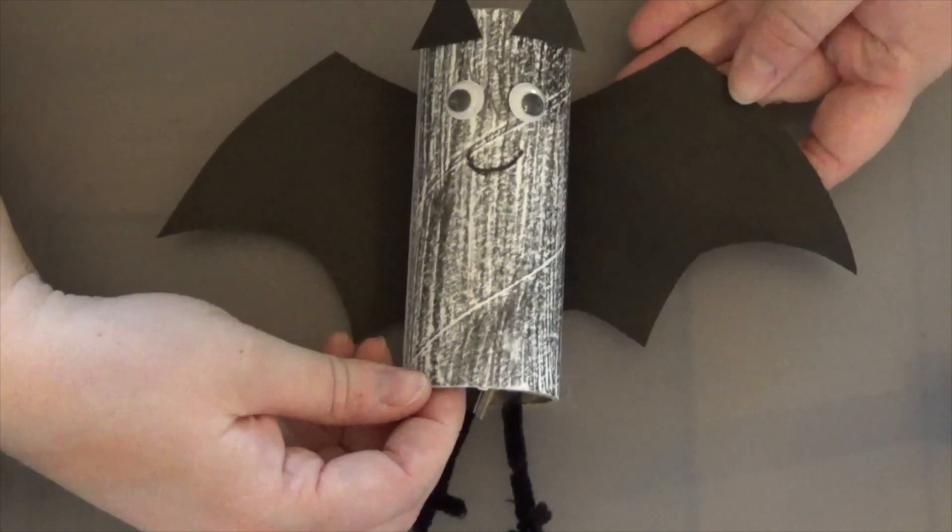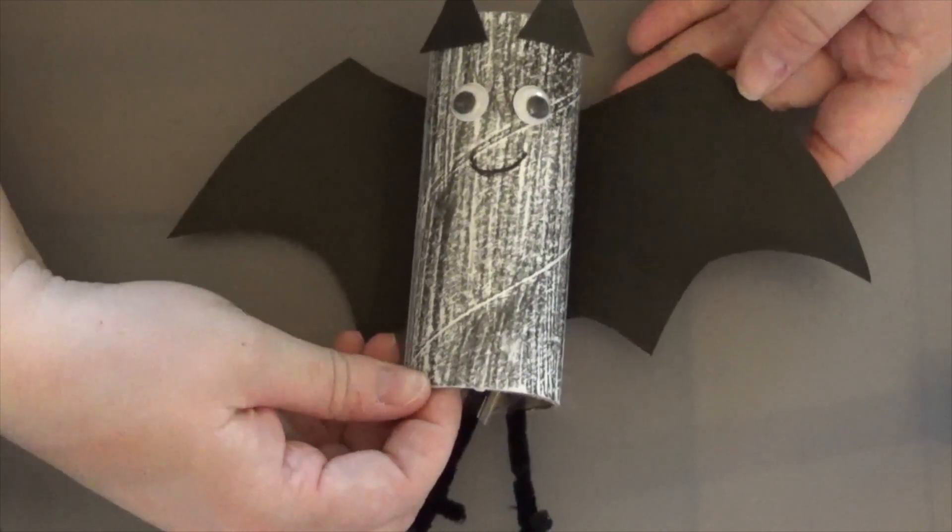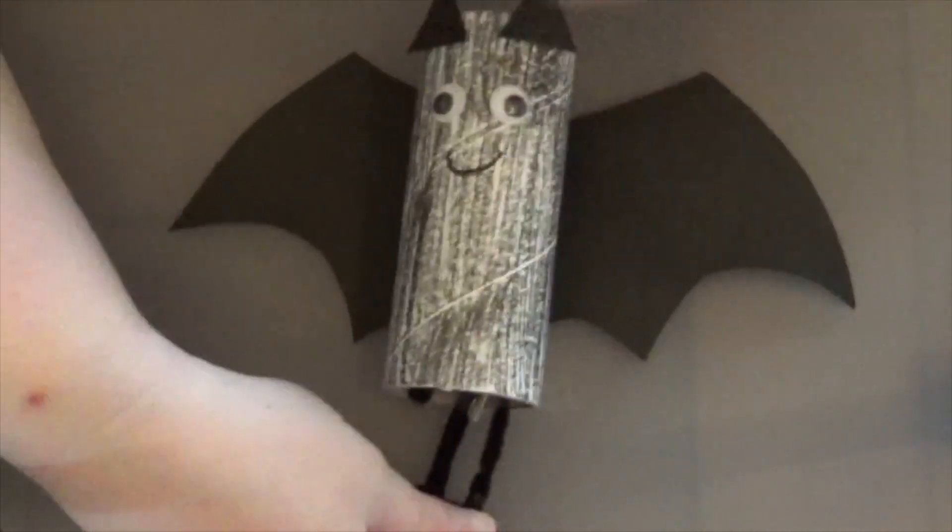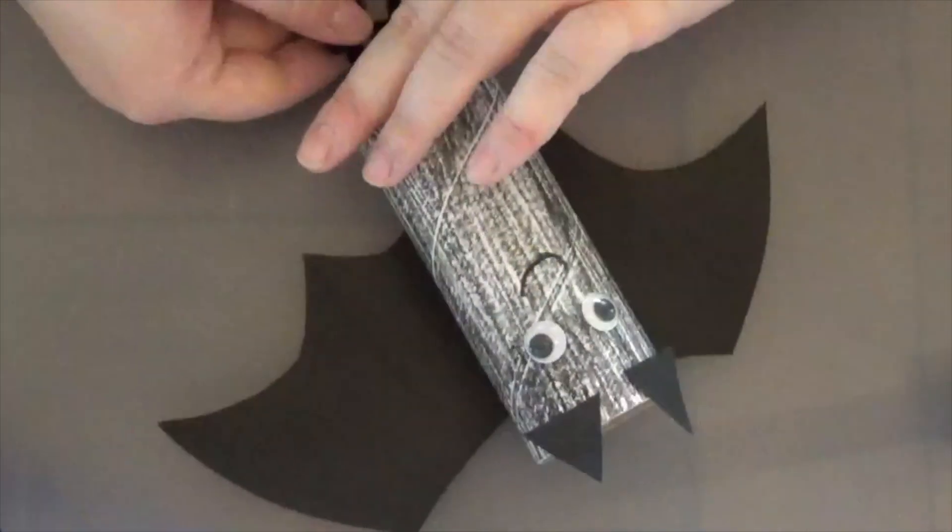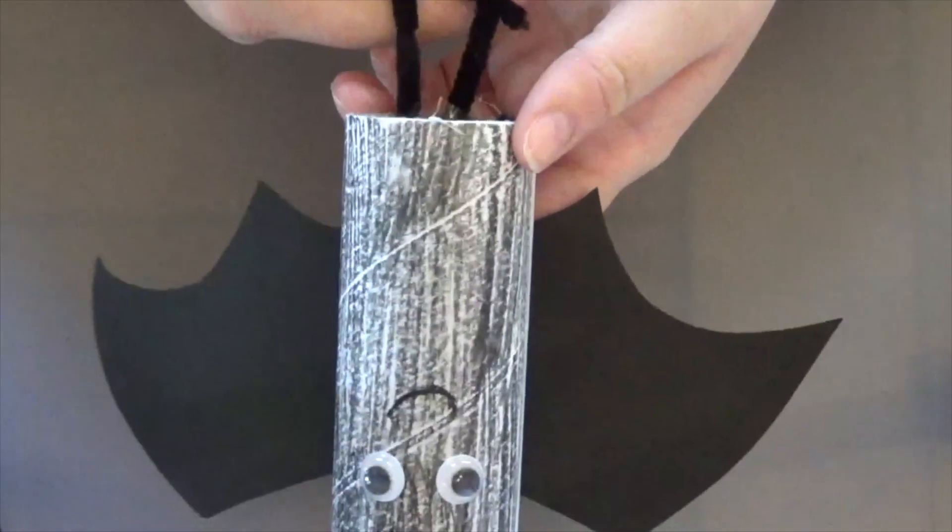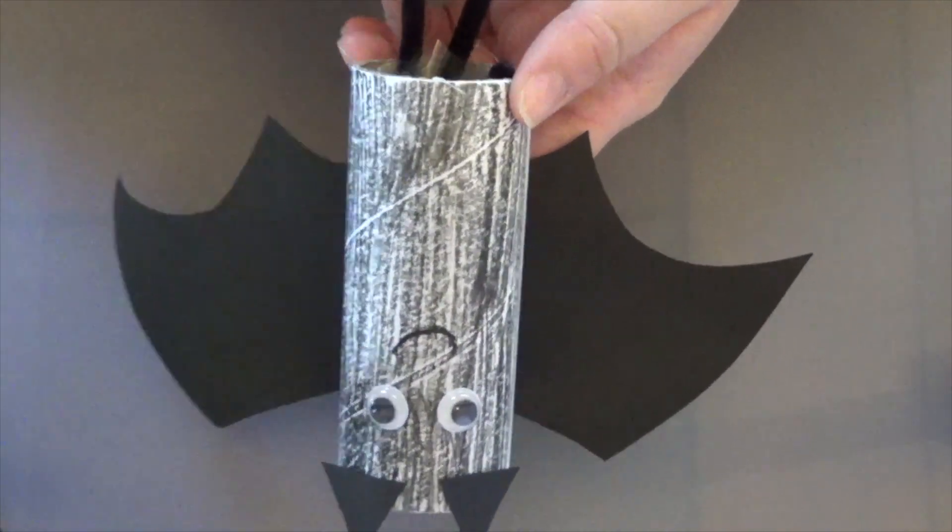And what I love about these guys is that we can actually hang them upside down. We can actually take our little pipe cleaners and bend them just a little bit. So they hook on our fingers and we can hang him upside down. He'll hang from your fingers.